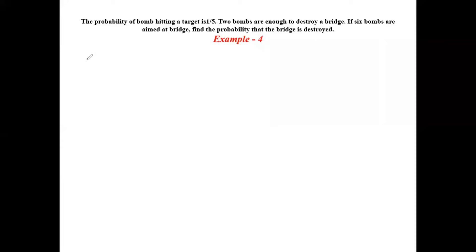Our next question is example number four. The probability of a bomb hitting a target is one by five. Two bombs are enough to destroy a bridge. If six bombs are aimed at the bridge, find the probability that the bridge is destroyed. The probability of a bomb hitting the target is one by five, which is equal to 0.2.